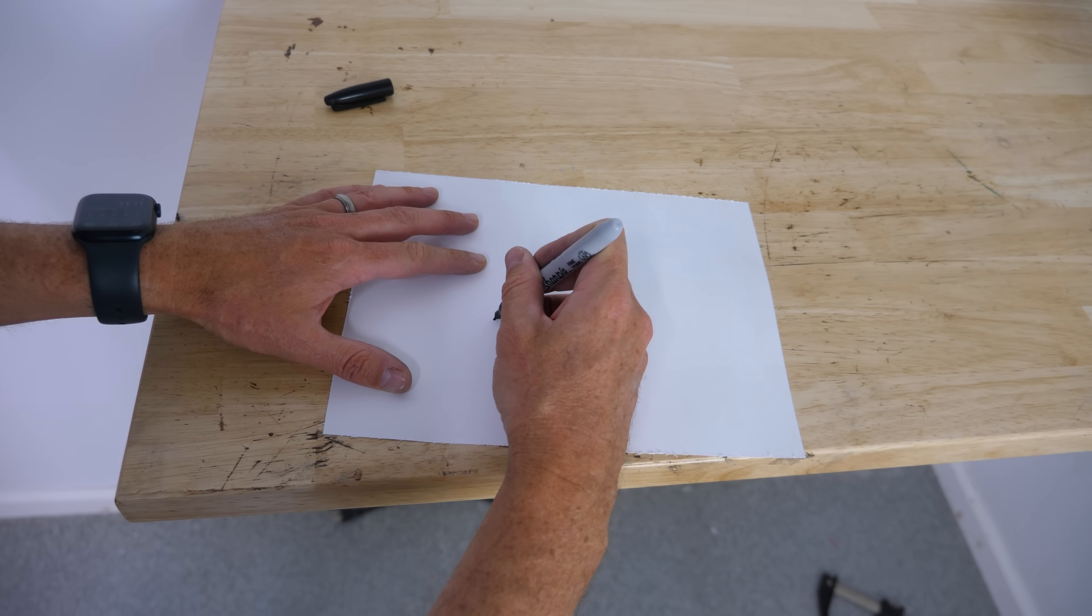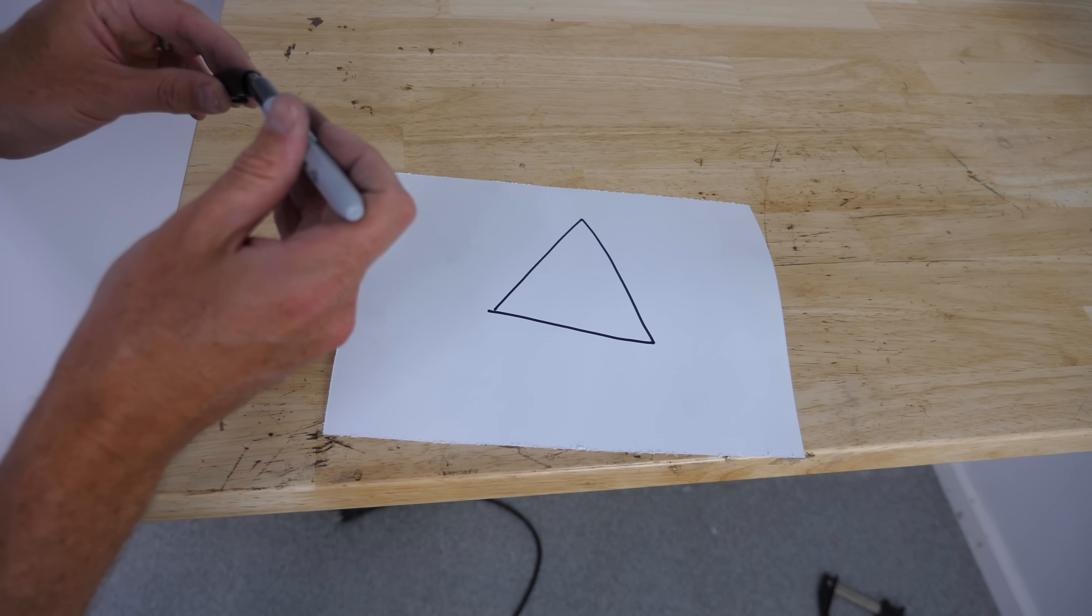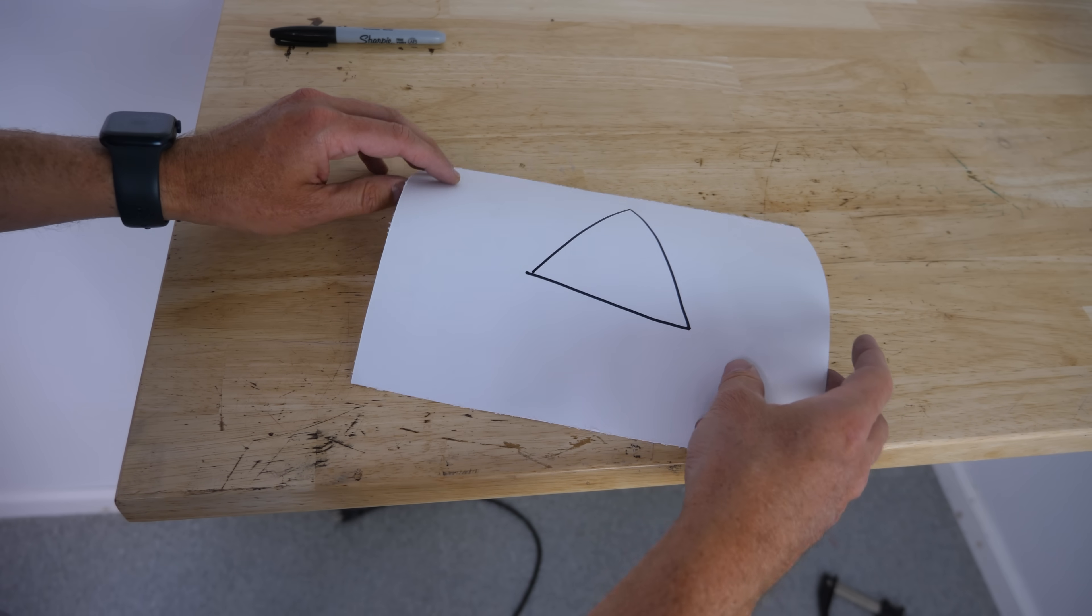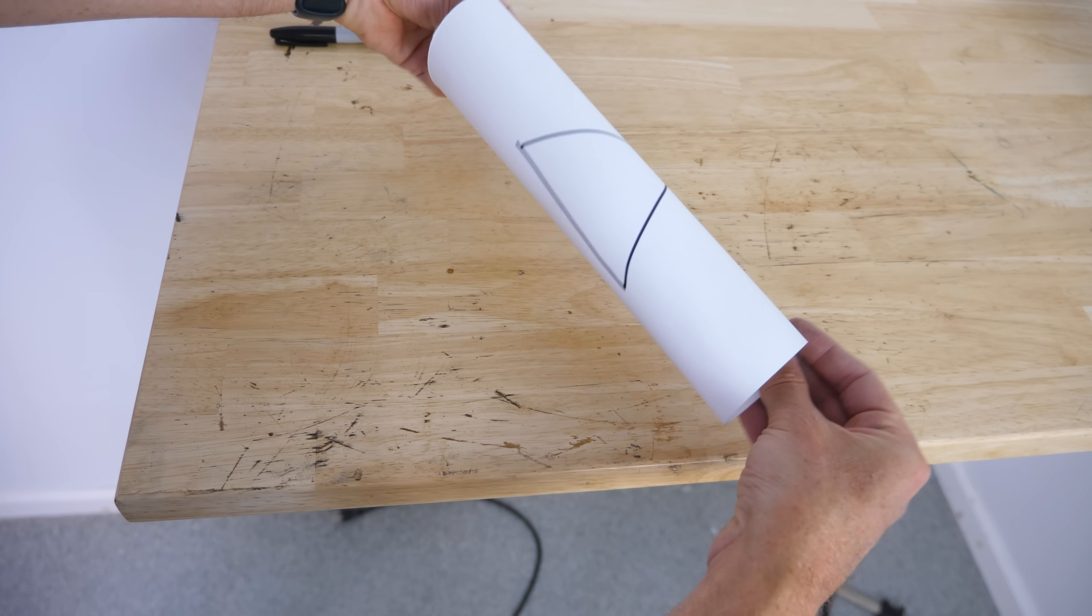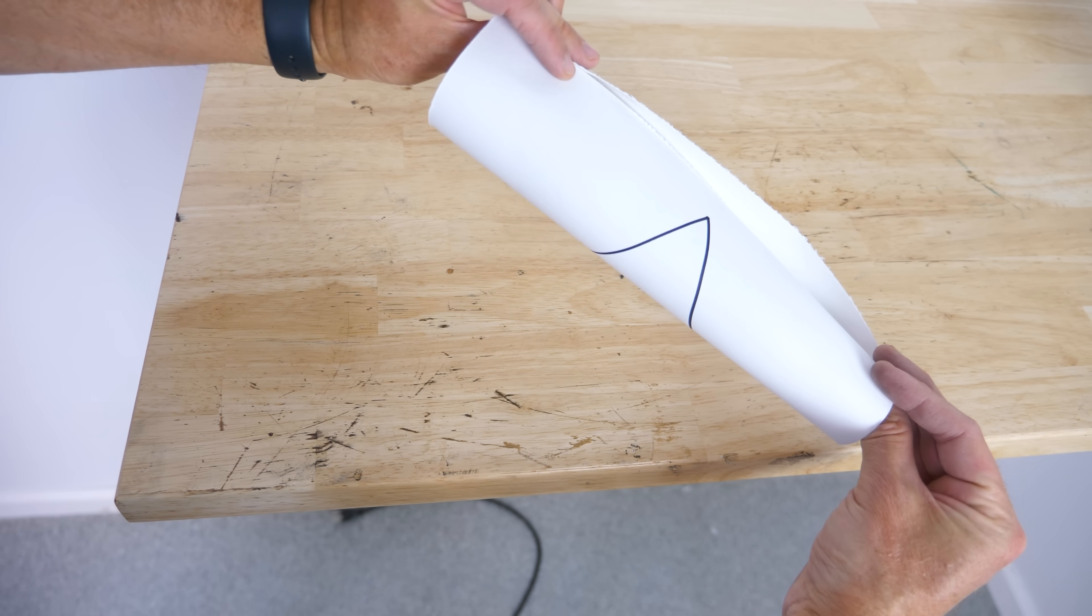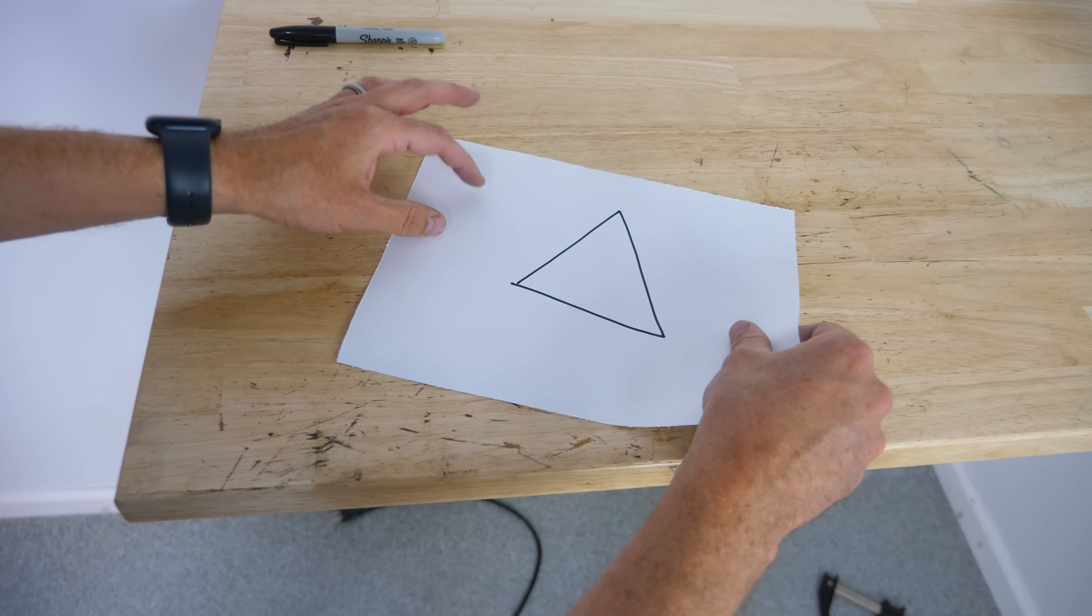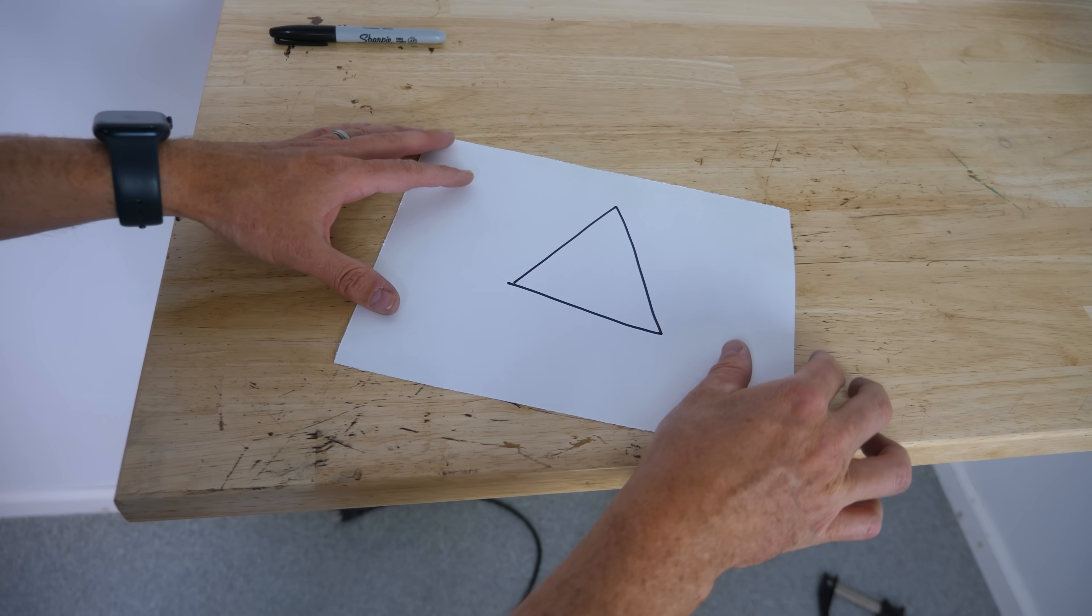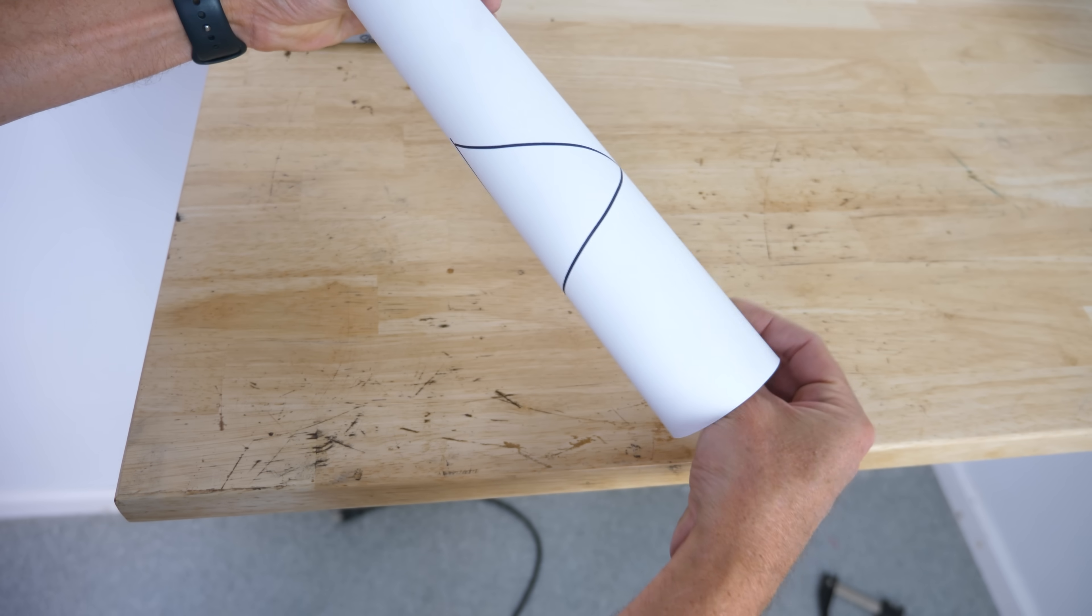A surface exhibits extrinsic curvature when that surface curves into a higher dimension in an embedding space. So, for example, if I take this two-dimensional piece of paper and draw a triangle on it, all the angles of the triangle will add up to 180 degrees. But I can roll the paper into the third dimension, so it has extrinsic curvature now. But notice that on the surface of the paper we didn't do anything to disturb the triangle. All the angles still add up to 180 degrees. If there were little two-dimensional beings living on this paper, they wouldn't know that this paper was curved because it's extrinsically curved.